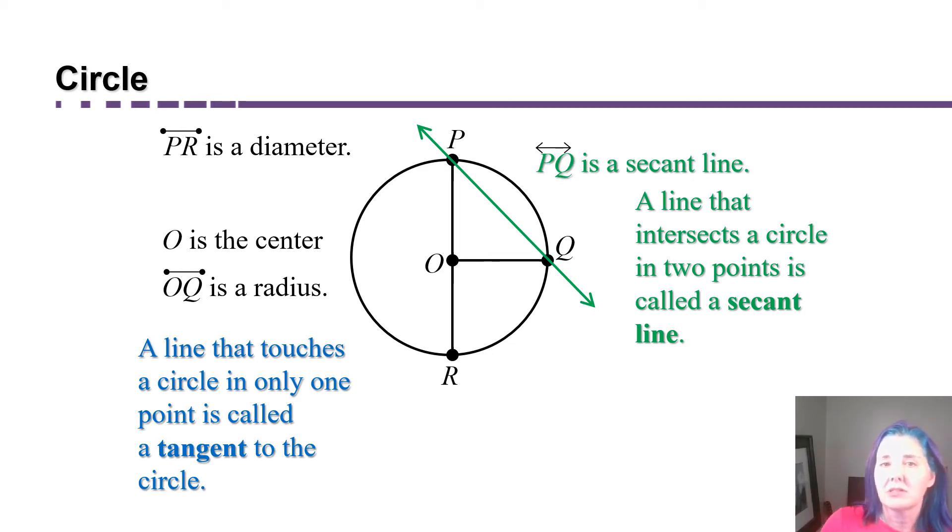On the other hand, if a line just touches at one point and bounces off the circle, that's called a tangent line. This line RT is an example of a tangent line.